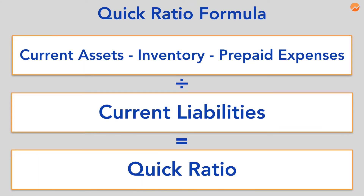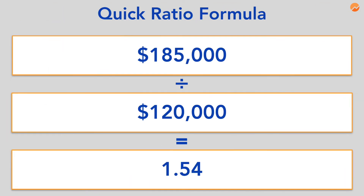Next, we have the quick ratio. The quick ratio is similar to the current ratio, but only considers the most liquid assets — you exclude inventory and prepaid expenses. The quick ratio is especially important when figuring out if you have enough to cover quick, unforeseen expenses. For ABC Business, the quick ratio is 1.54, meaning they have $1.54 on hand to pay off every $1 of debt.